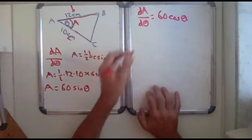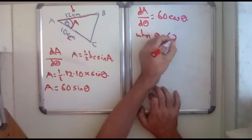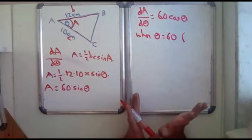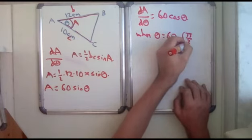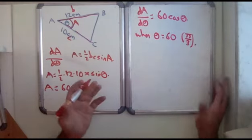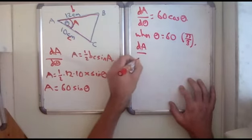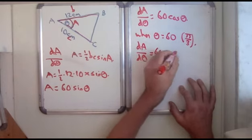So when theta equals 60, or you know that pi radians is 180, so 60 is pi by 3. It doesn't actually matter if you're doing this. You just need to work out cos 60. So dA by d theta equals 60 cos pi by 3, or 60 cos 60.